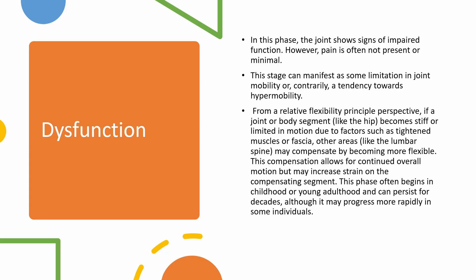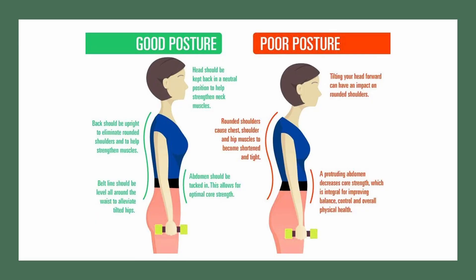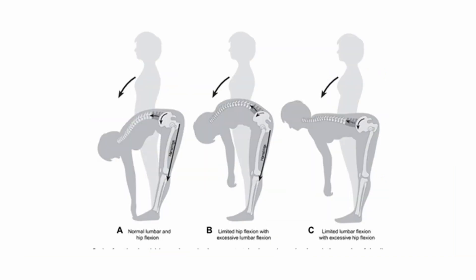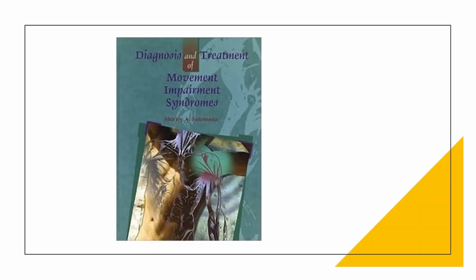The first stage, dysfunction, is when the joint shows signs of impaired function. Despite minimal or absent pain, this stage can present with some limitations in joint mobility or a tendency towards hypermobility. When a joint or body segment, like the hip, becomes stiff or limited in motion, other areas, like the lumbar spine, may compensate by becoming more flexible, enabling overall motion to continue but increasing strain on the compensating segment. The timeline for this phase can range from decades to a more rapid progression, depending on individual factors. For a deeper understanding of various types of dysfunctions, their resulting functional impairments, and associated pain, I recommend exploring a specific resource that offers a comprehensive overview of abnormal functional alterations and strategies on how to evaluate and treat these conditions.